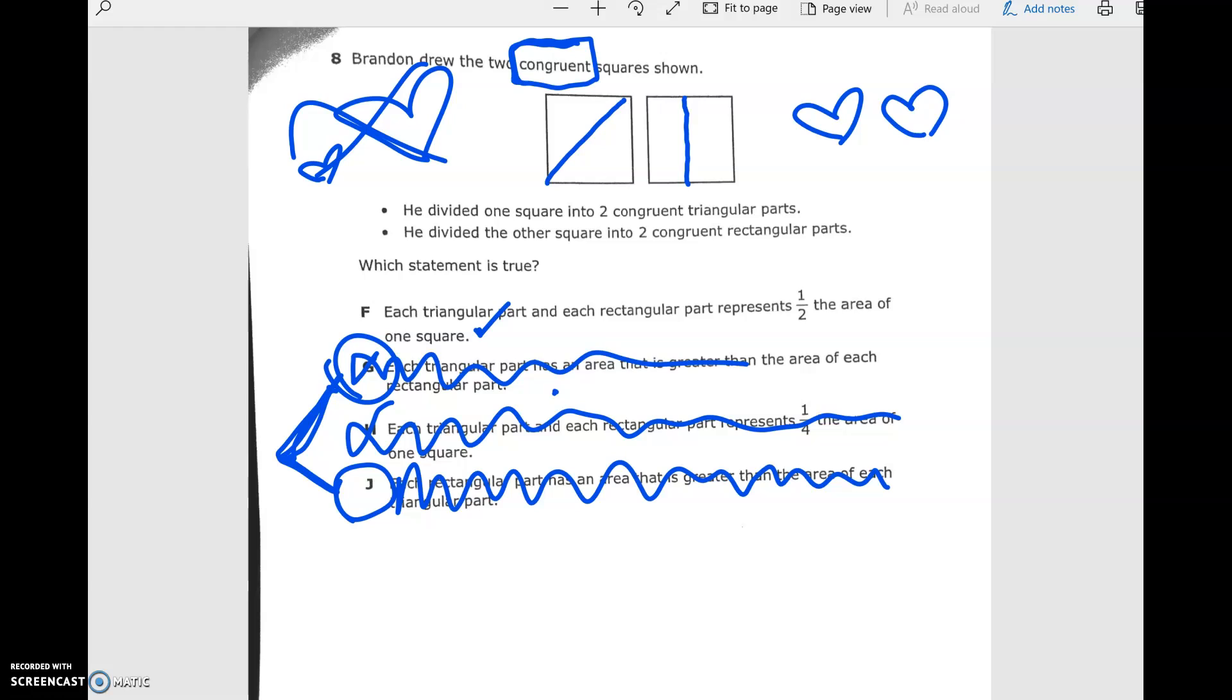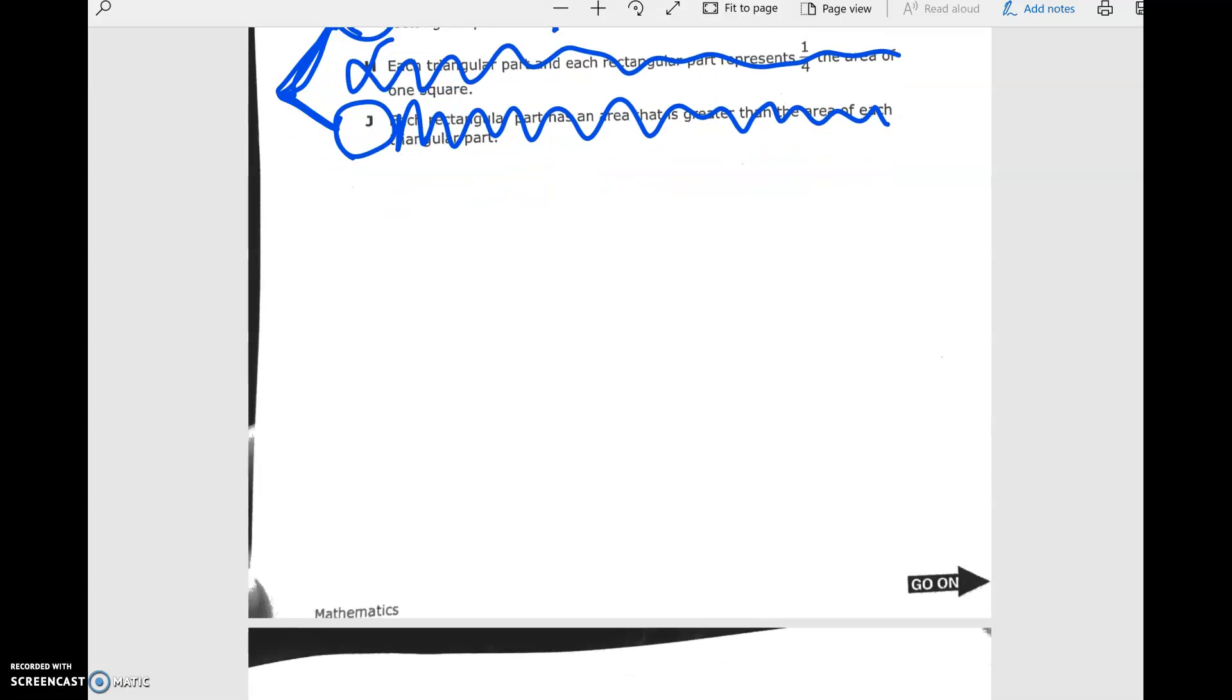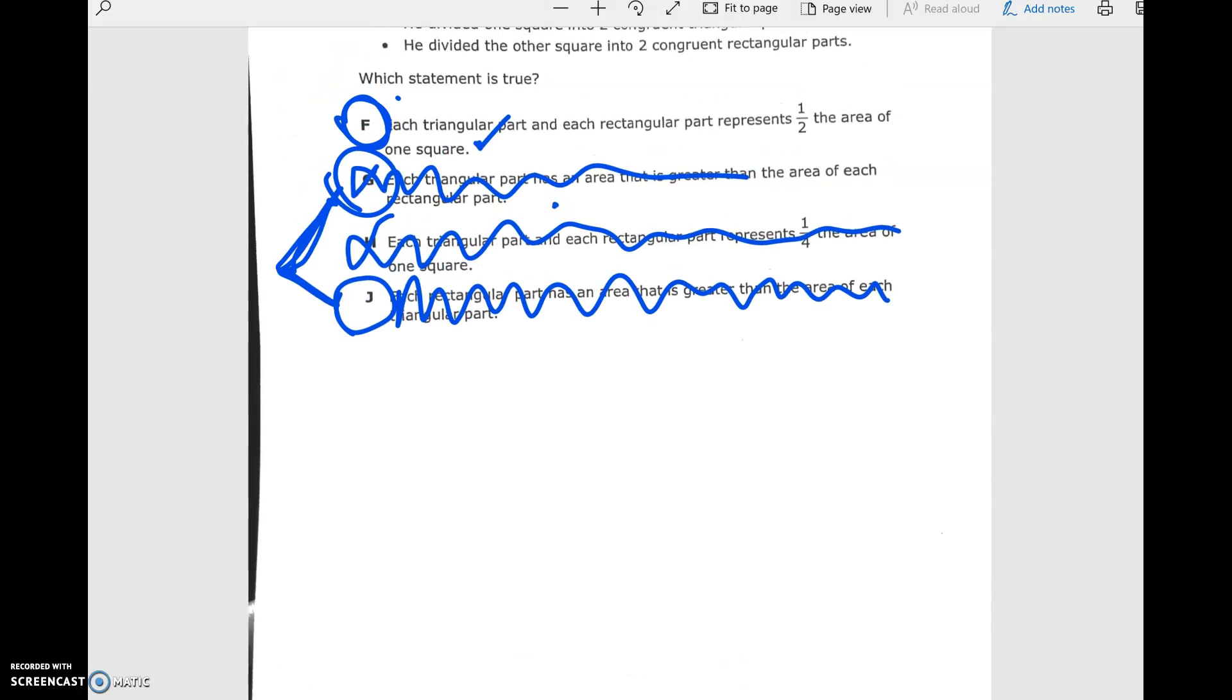Each rectangular part has an area that is greater. Once again, that's like number two. This answer and this answer are the same. If they're the same idea, then that means that they can't be true or they're both right, depending. They're each one half. It's just they look different. But if this was our sandwich, remember that comic strip that we saw with Family Circus? This is one half and this is one half. If I make the same size of sandwich, then it wouldn't make a difference. So your correct answer was F.